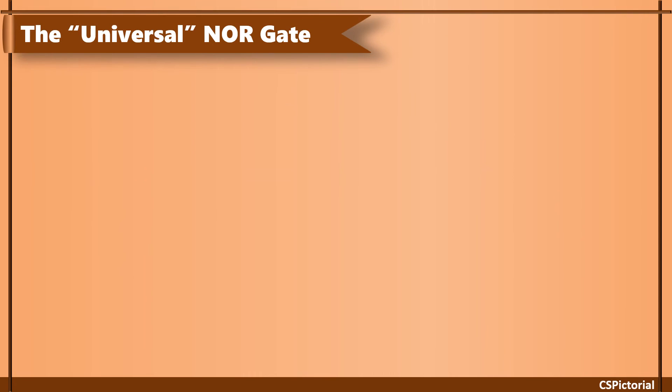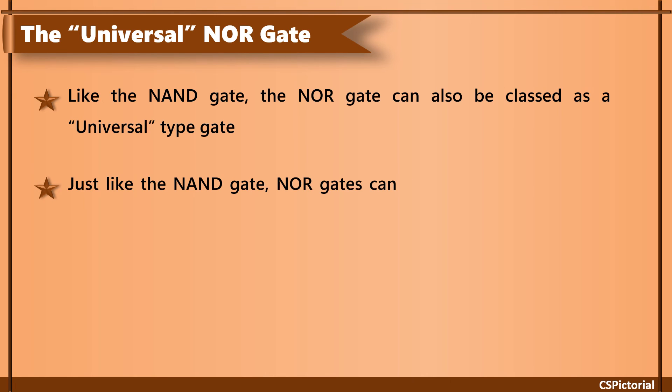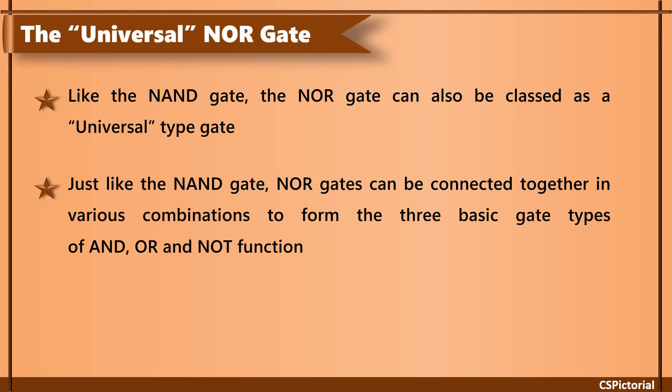The NOR gate is also termed as universal logic gate because it can also be used to produce all the other logic gates. Like the NAND gate, the NOR gates can be connected in various combinations to produce the result of AND or NOT gates.